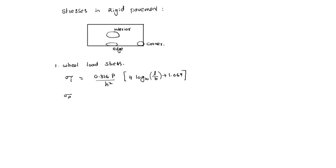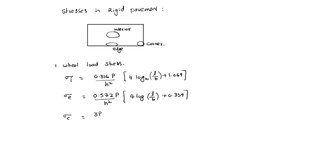Stress at edge region equals 0.572P by H squared, into 4 log (L/B) plus 0.359. Stress at corner region equals 3P by H squared, into [1 minus (A root 2 by L)] to the power of 0.6.